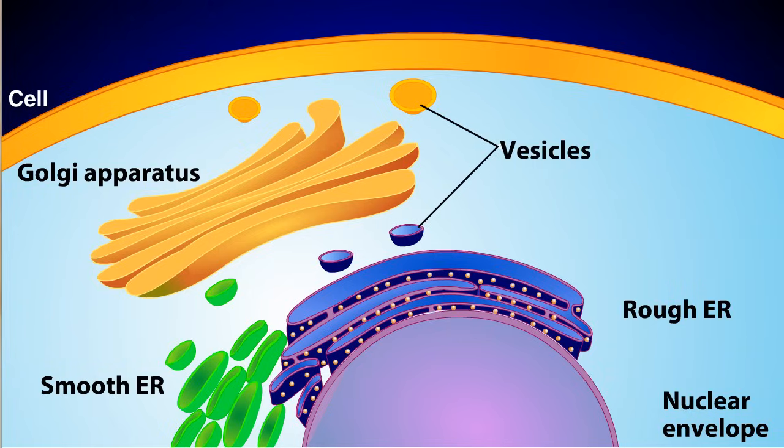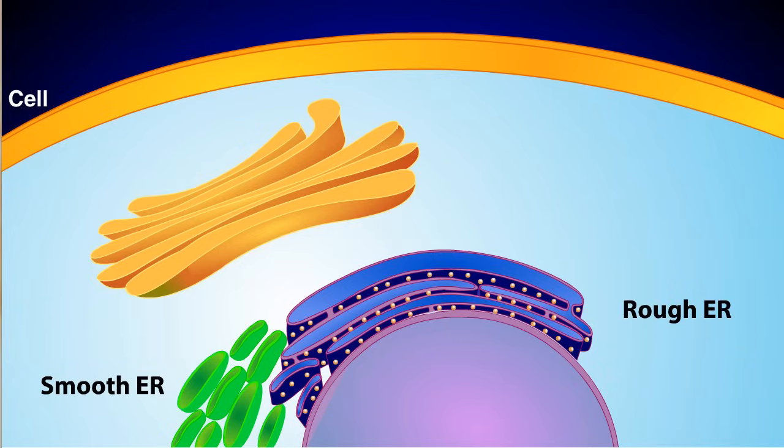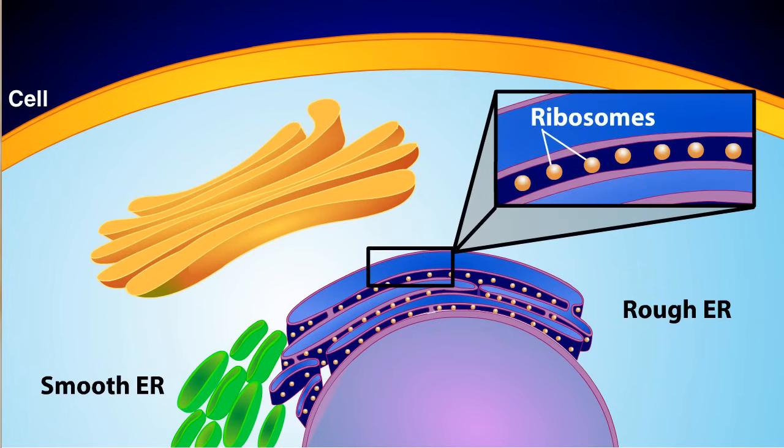Let's start our tour with the endoplasmic reticulum. There are two types of endoplasmic reticulum: rough and smooth. The rough endoplasmic reticulum, or rough ER, is studded with ribosomes. These ribosomes are what give the rough ER its rough appearance.